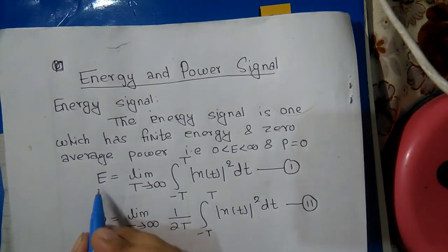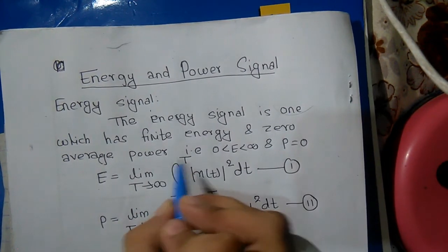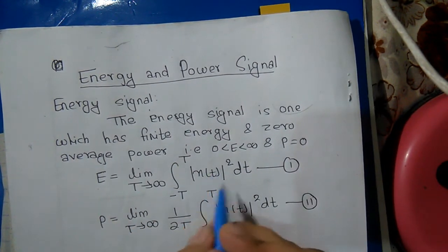The energy is given by the equation: E = limit T tends to infinity, integration from minus T to T, |x(t)|² dt.